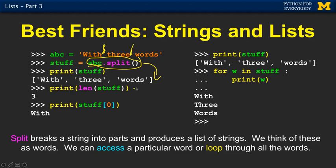Now when we're done, we see that in that particular string there were three words, and we can pull out the first word by printing stuff sub zero. Sometimes we want the second word, or the third word, or maybe we want to write a loop that loops through all the words. It's very easy to do.